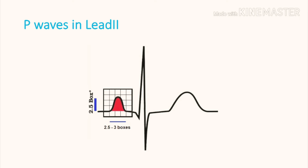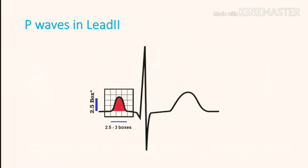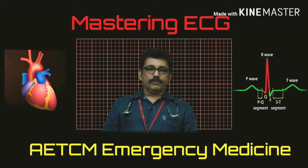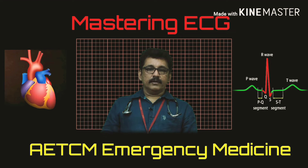Normally we observe P-waves in lead 2. That is why we take lead 2 as a rhythm strip. But if you look at the V1 lead, you can see a biphasic P-wave there.